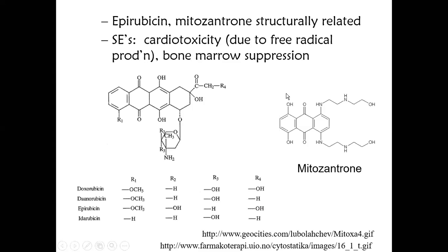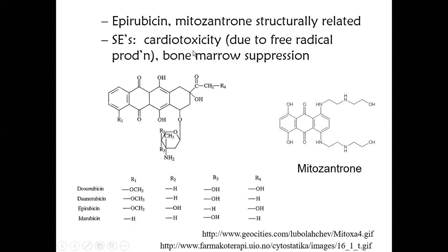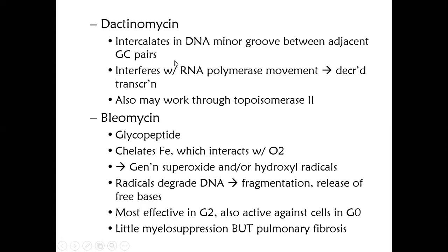This shows the importance of understanding the central dogma overview — all drugs act somewhere in that central pathway. Other anthracycline drugs include epirubicin, mitomycin, and mitoxantrone — these are structurally related. One very common and important side effect of anthracycline antibiotics is cardiotoxicity. They are very cardiotoxic, sometimes contraindicated because of this, and of course they cause bone marrow depression. The cardiotoxicity occurs because of free radical production.